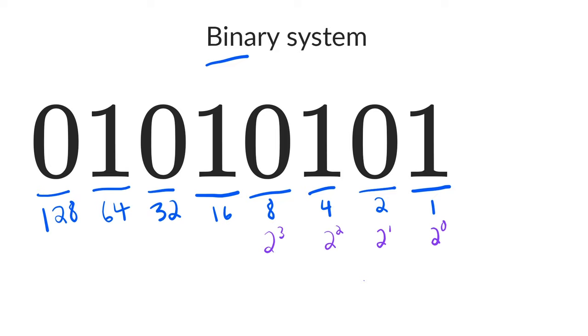Another way of doing this is to calculate the powers of 2. So this place is 2 to the 4th, which is 16, this is 2 to the 5th, which is 32, this is 2 to the 6th, 64, and this is 2 to the 7th, 128.